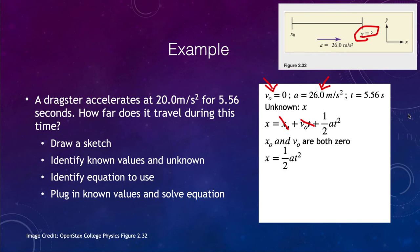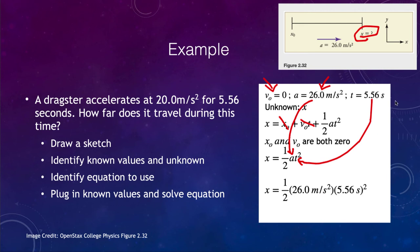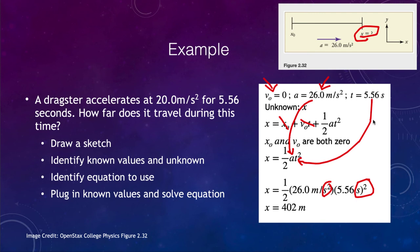We put our values in: the time goes in for t squared, the acceleration goes in, and one half is just a constant. Multiplying the numbers together, we then solve the equation. Checking units: the seconds squared from t squared cancel with the seconds squared in the denominator of the acceleration, leaving us with just meters. It is always important to check dimensions — if you were getting meters per second, that would tell you something is wrong. Our final answer is 402 meters: that is how far this dragster travels in 5.56 seconds.